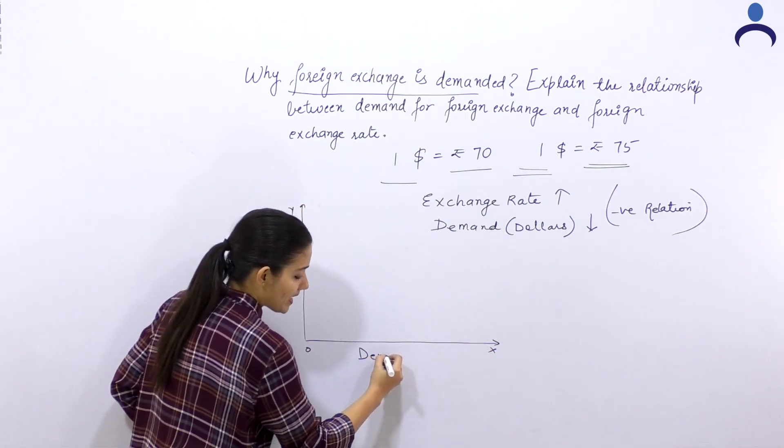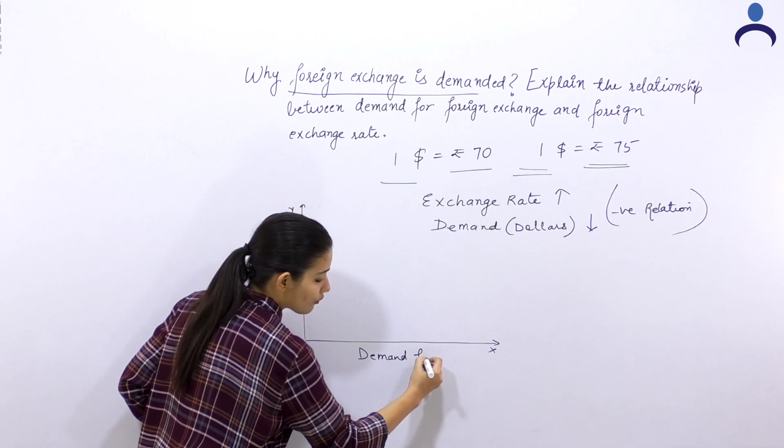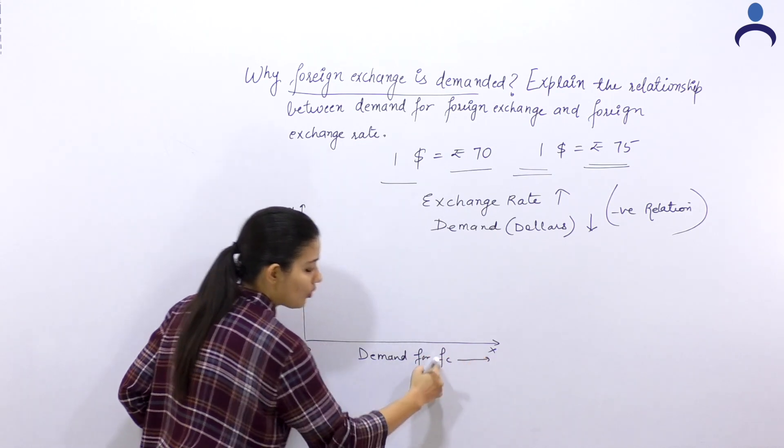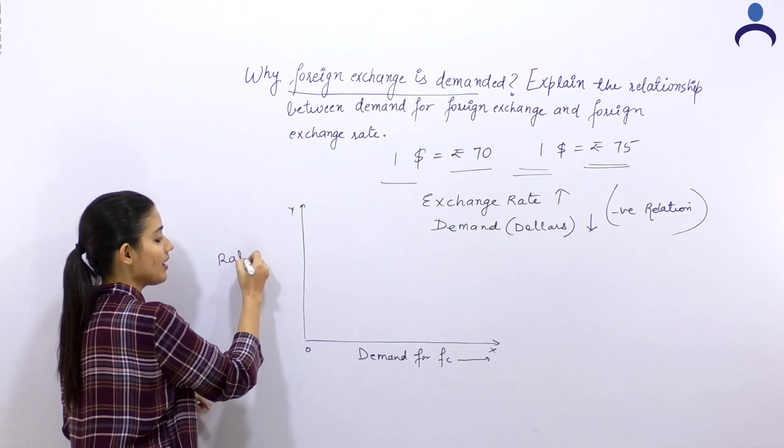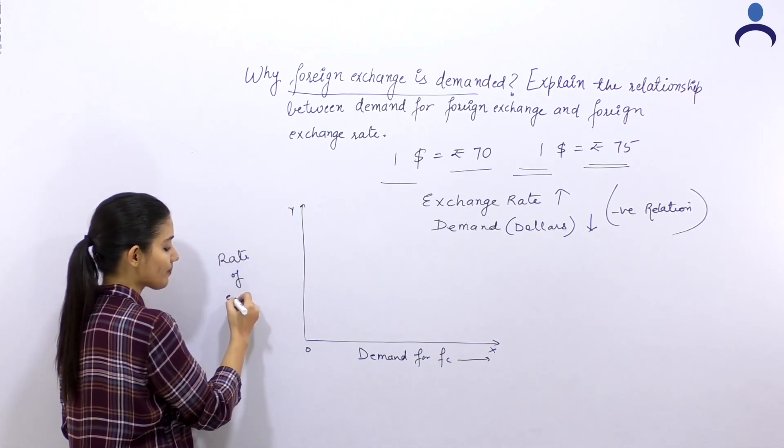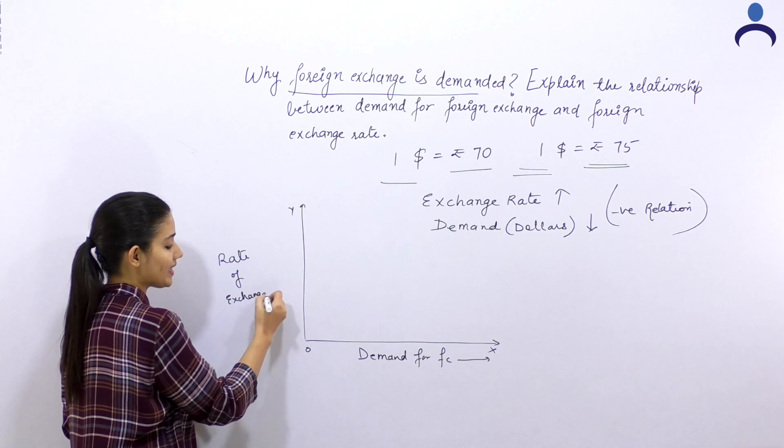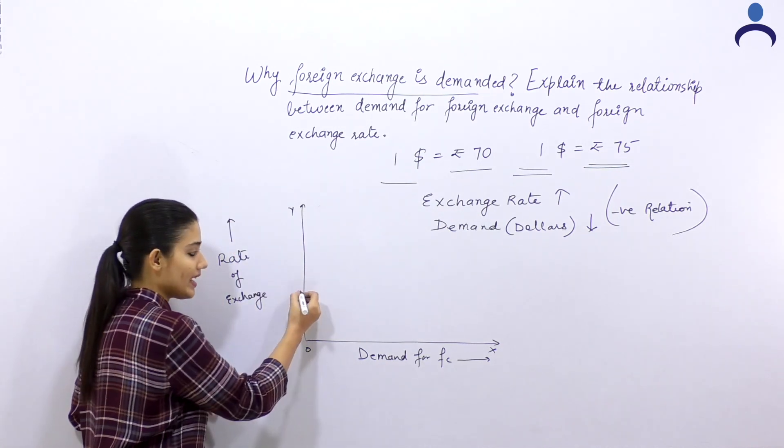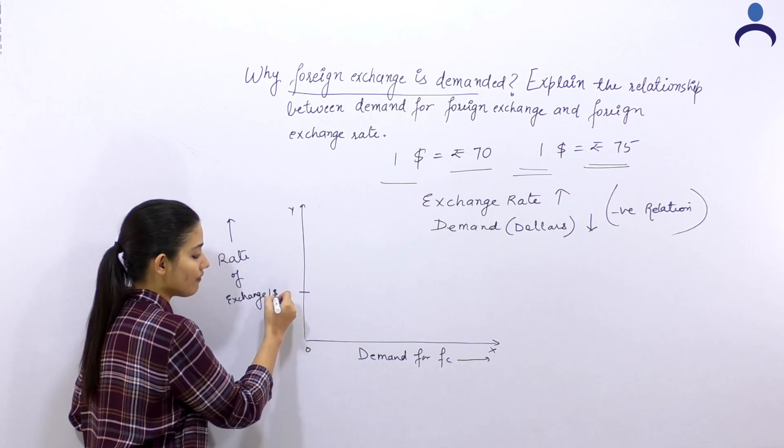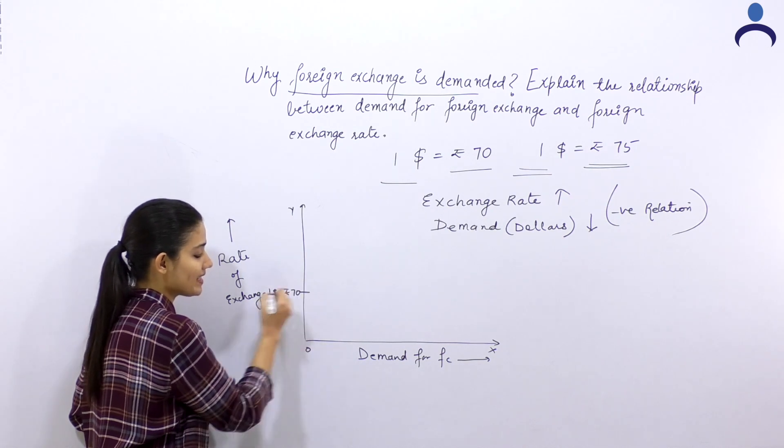We, on the x-axis, we have put demand for foreign currency. I have put FCE in simple terms. And here I have put rate of exchange or foreign exchange rate, both mean the same. How much was the value of one dollar? 70.